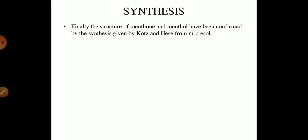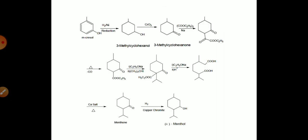So the synthesis of the menthol can be explained by the Coates and Horsh form from the m-cresol. So this is the synthetic method for the menthol. In this method you can see that the m-cresol is treated with the H2O and nickel and by the reduction it will give the 3-methyl cyclohexenone.